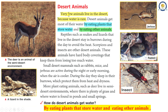Desert animals. Very few animals live in the desert because water is rare. Desert animals get most of their water by eating plants that store water and by eating other animals. Reptiles such as snakes and lizards that live in the desert stay in burrows during the day to avoid the heat. Scorpions and insects are other desert animals. These animals have hard body coverings that keep them from losing too much water. Small desert mammals such as rabbits, mice, and jerboas are active during the night or early morning when the air is cooler. During the day they sleep in their burrows, which protect them from heat and dryness. More plant-eating animals such as deer live in semi-desert environments where there is plenty of grass and land, and where water is found in ponds and small springs.